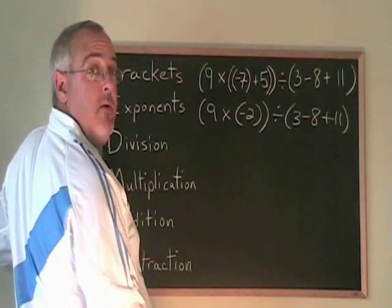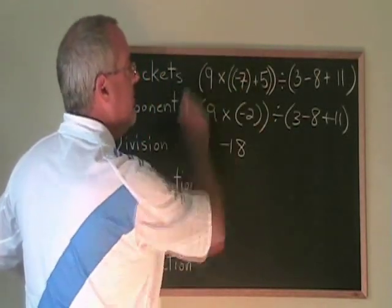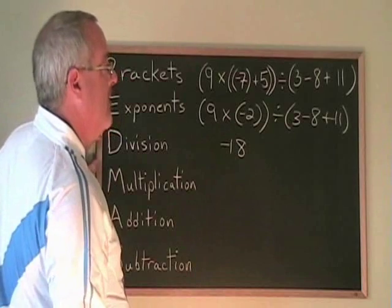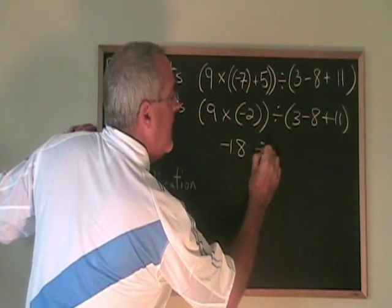9 times negative 2 is negative 18. I have an answer for this big bracket on the left side, and I don't need the bracket anymore. I have to copy the rest down, divided by, and then the other bracket.